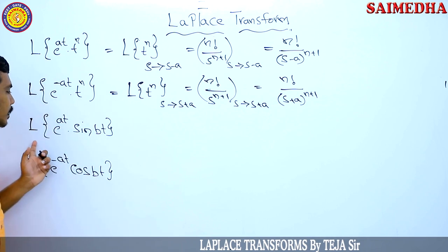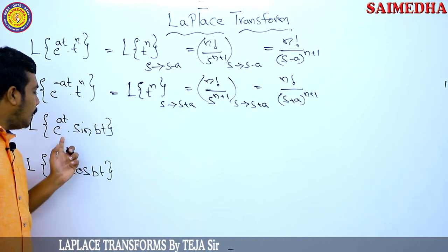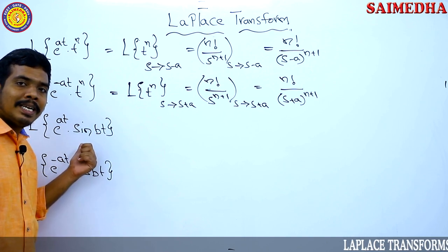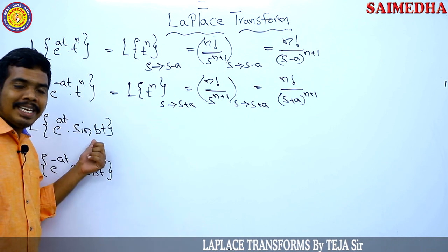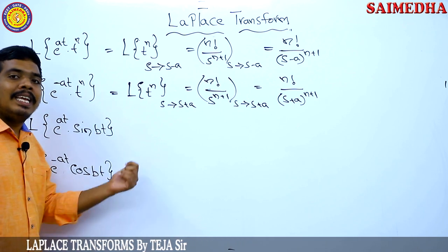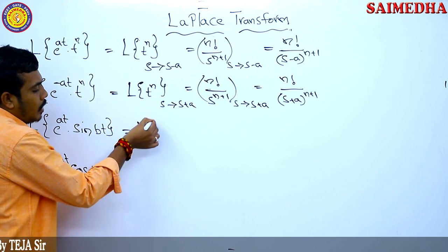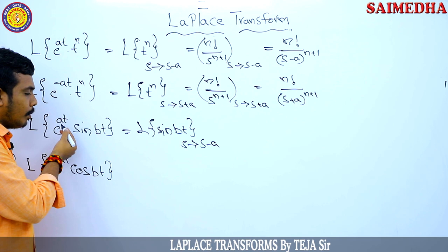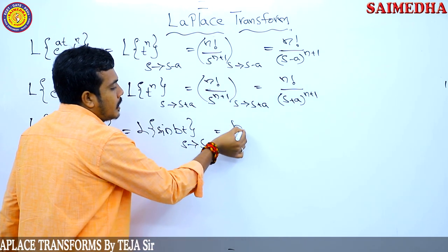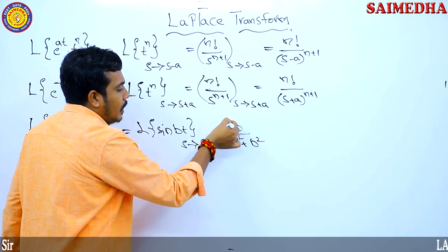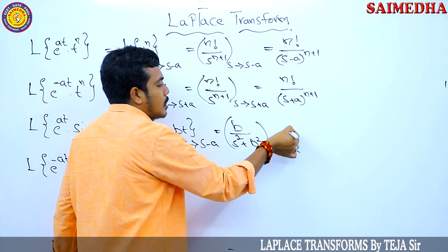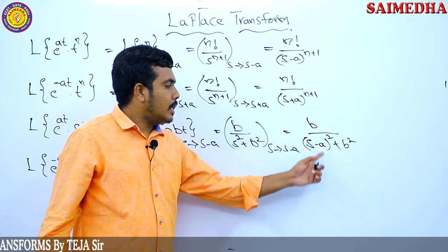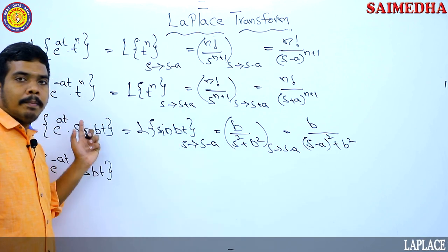For the next condition, the Laplace transform of e^(at) into sin(bt): by the first shifting theorem, the Laplace transform of sin(bt) is b/(s²+b²). For e^(at) multiplied by sin(bt), we replace s with s minus a, giving b divided by (s minus a)² plus b². This is the Laplace transform of e^(at) multiplied with sin(bt).